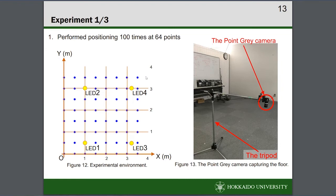In our research, we conducted three experiments. The first was a simple positioning test to evaluate the proposed method, where we conducted 100 positioning tests at 64 locations each. The experimental environment is shown in Figure 12. Also, the point gray camera and the tripod is shown in Figure 13.